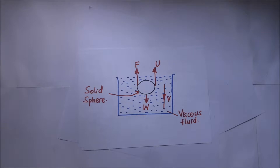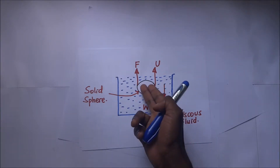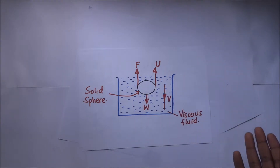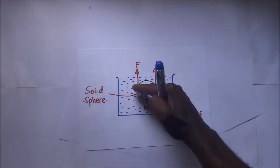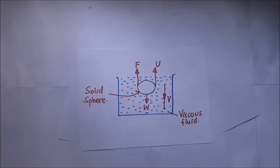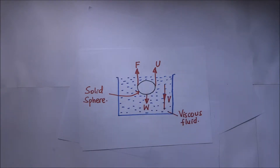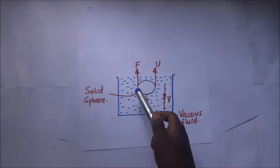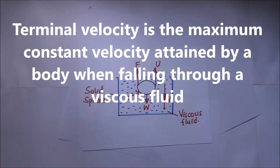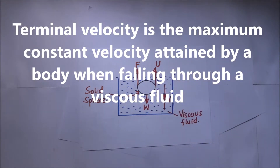When the sphere starts moving at a constant velocity, there is no more acceleration, and the resultant force is zero since the upward forces now equal the downward forces. That velocity it has attained is what we call terminal velocity. Terminal velocity is the maximum constant velocity that is attained by a body when it is falling through a viscous fluid.